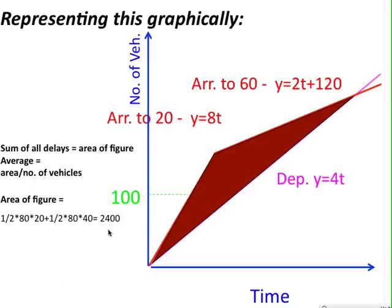So, the area of the figure, once again, is 2,400. The average delay, then, is 2,400 divided by the total number of vehicles arriving, which is 240. So, the average delay is 10 minutes per vehicle.